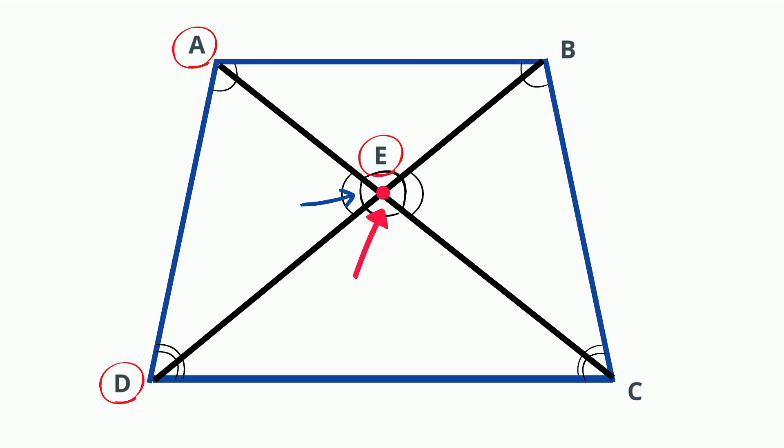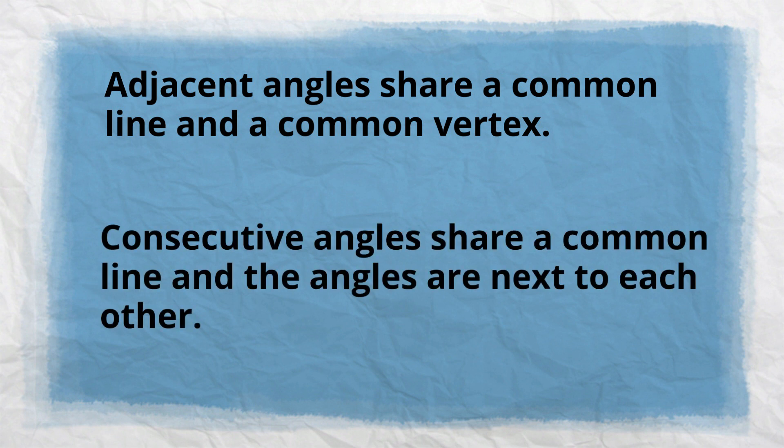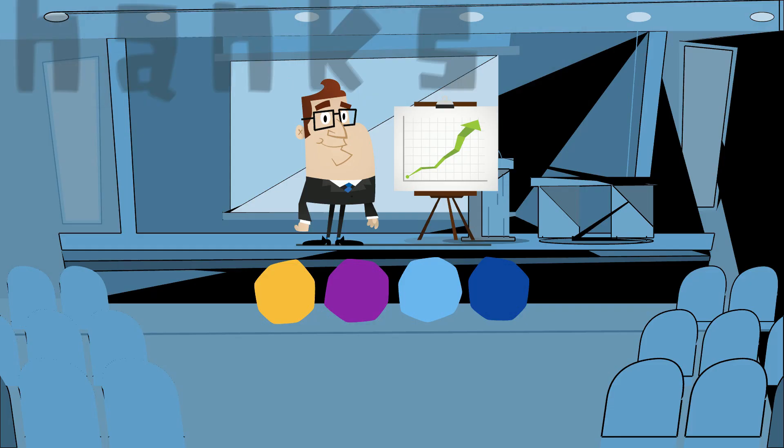So, in summary, an adjacent angle share a common line and vertex, and a consecutive angle share a common line and the angles are described as next to each other.